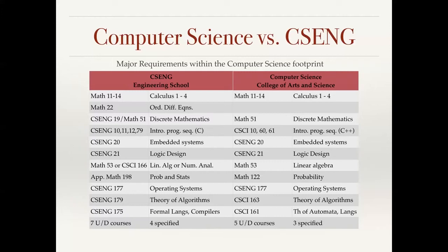They take linear algebra or numerical analysis in the computer engineering department, whereas our students take linear algebra. Both take probability, operating systems, theory of algorithms, and formal languages or theories of automata and languages. The engineering school requires seven upper division courses, four of which are specified by the degree, and our department has five upper division courses, three of which are specified by the emphasis. Most computer science students in the College of Arts and Science take many more upper division computer science and computer engineering classes than are required.